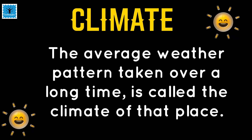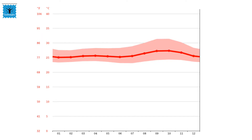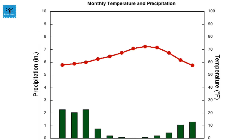Different places in the world have different types of climate. If the temperature of a place is high most of the time, we say the climate of that place is hot. And if there is also heavy rainfall on most days in the same place, then we say the climate of the place is hot and wet.